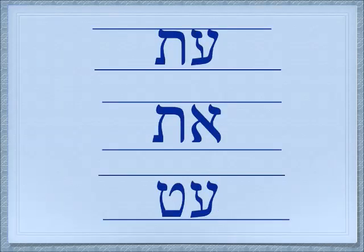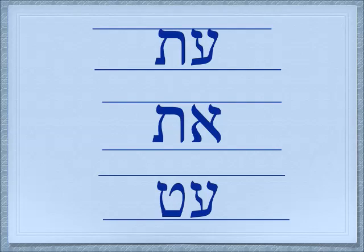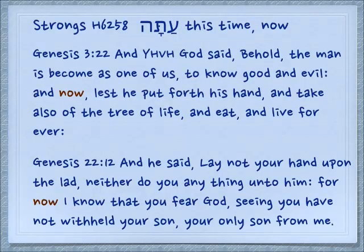Now we don't want to confuse this ayin-tav 'et,' which means time period, with the alef-tav 'et,' which principally is the direct object marker but also has many other meanings — I'll put a link below to a rather long series I did about that. There is also another word, ayin-tet, which is not used very much and means a pen or a stylus for writing.